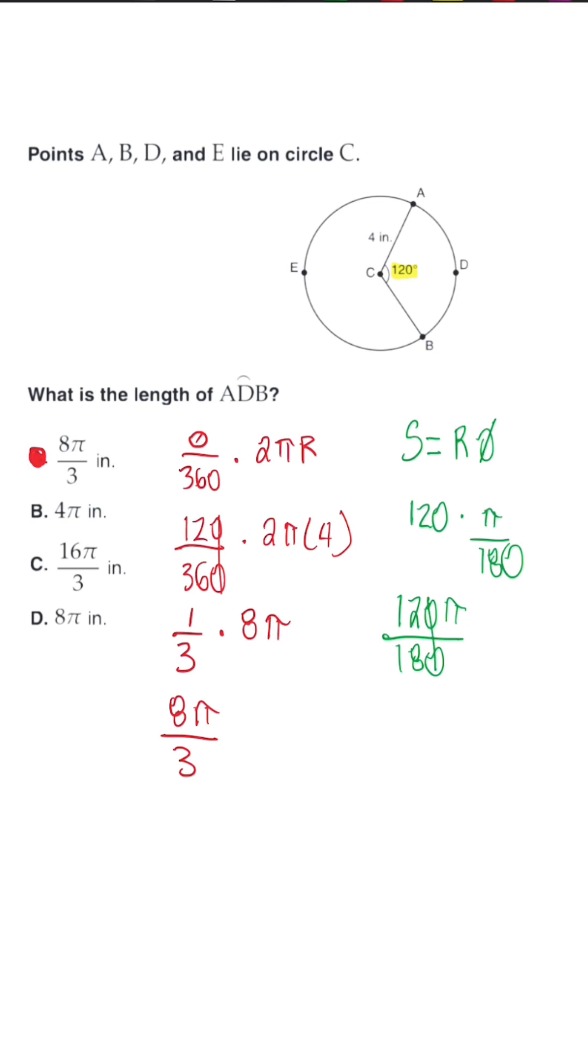So this turns into 12 over 18. When we divide by 6, we're going to get 2 over 3 pi.